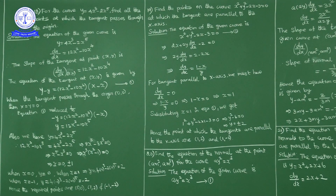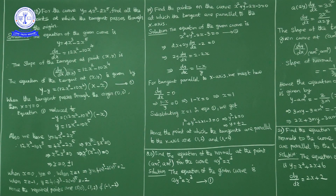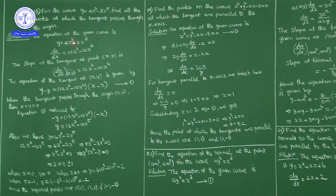When x = 0, substituting in the given curve gives y = 0. When x = 1, y = 4 - 2 = 2, so the point is (1, 2). When x = -1, y = 4(-1)³ - 2(-1)⁵ = -4 + 2 = -2, so the point is (-1, -2). The required points are (0, 0), (1, 2), and (-1, -2).